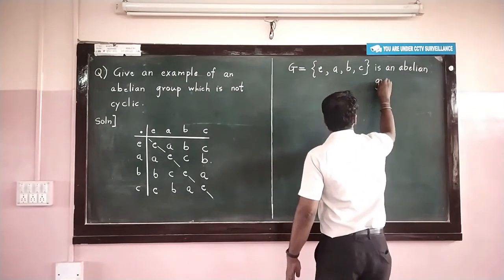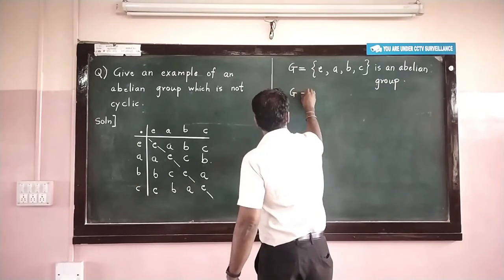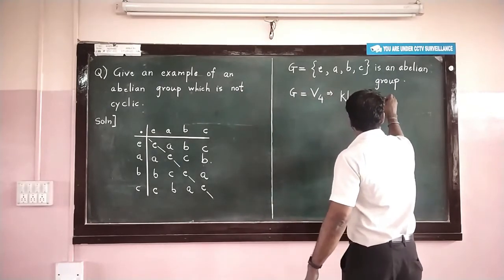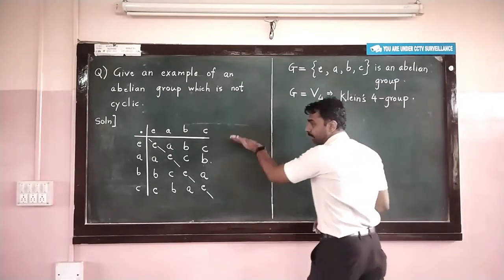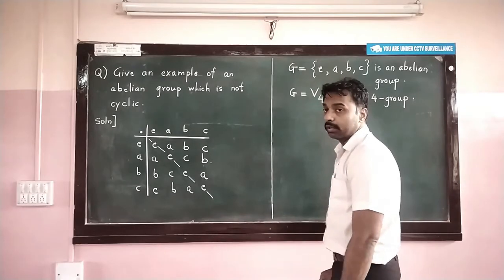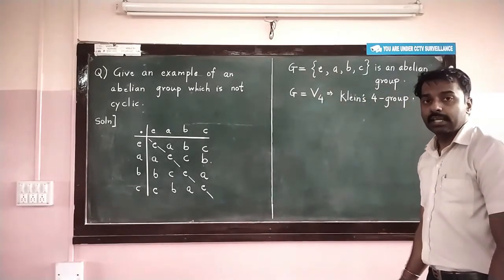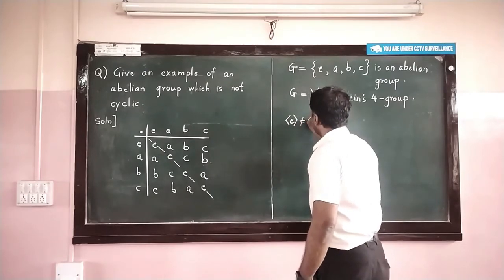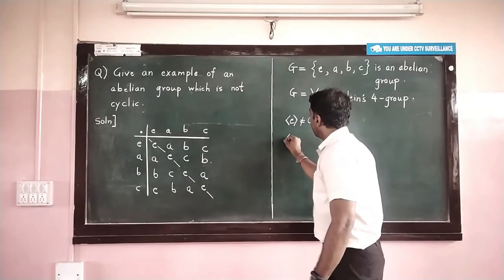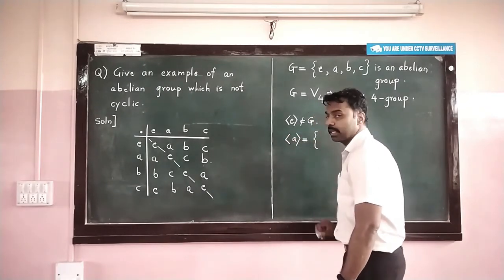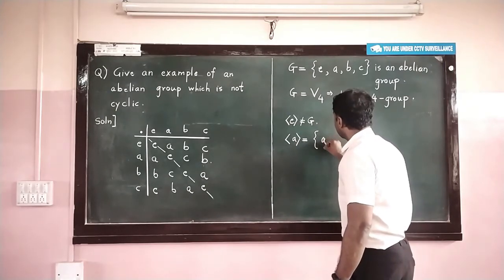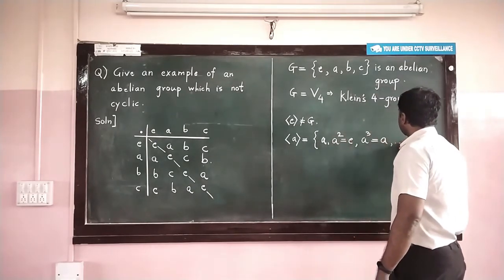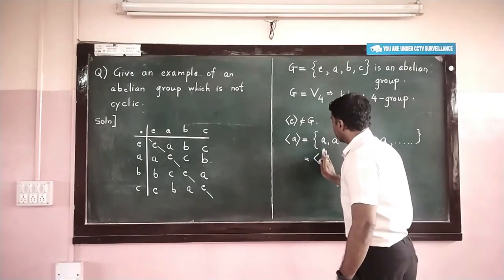This group G = {E, A, B, C} that we have constructed is not cyclic. Why is it not cyclic? It means we cannot find a generator of this group. The identity clearly cannot generate the entire group because it only generates itself. If I look at the cyclic subgroup generated by A, it contains A and A², but A² = identity, so A³ = A again. Therefore, the cyclic subgroup generated by A contains only two elements.